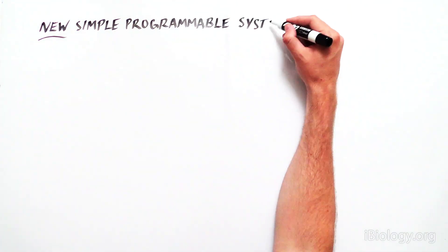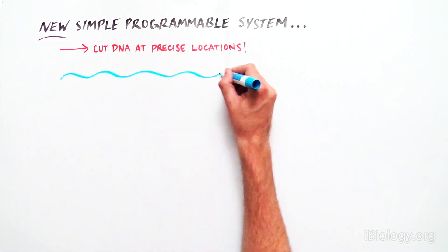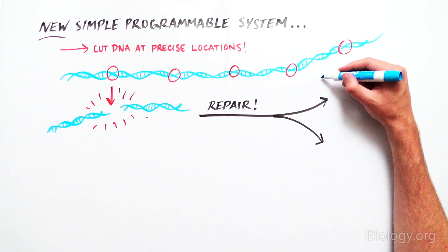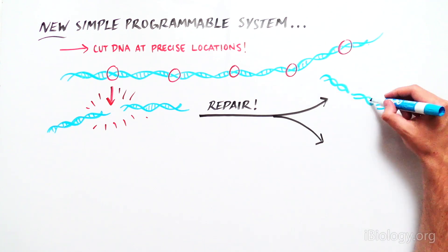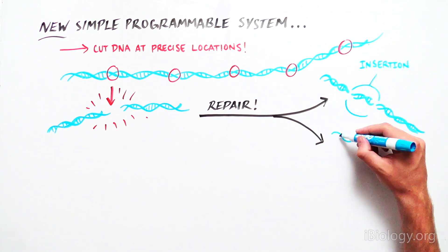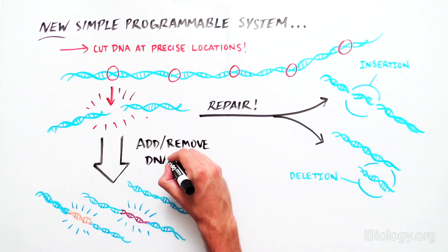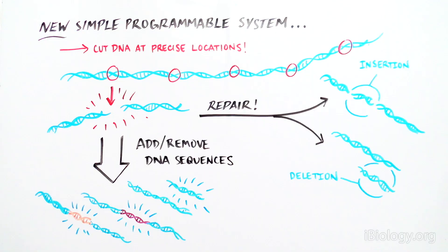By having this simple and easily programmable system, scientists can now induce breaks in the DNA at precise locations. When the cell tries to repair the broken DNA strands by ligating them back together, it often causes a small insertion or deletion that changes the DNA sequence. Scientists can take advantage of this process to add or remove specific DNA sequences at the site of the break.